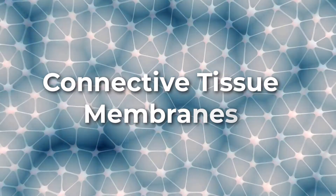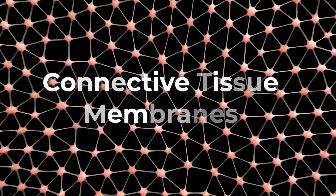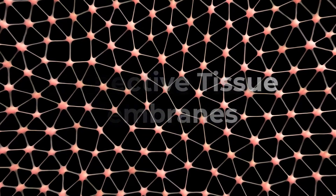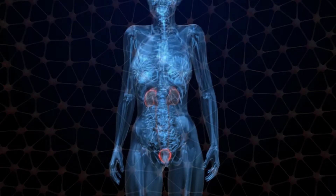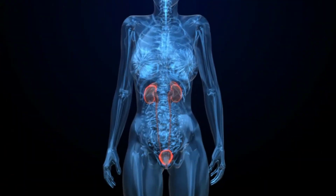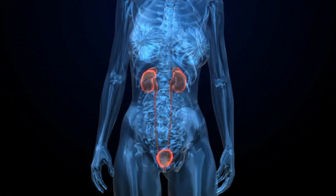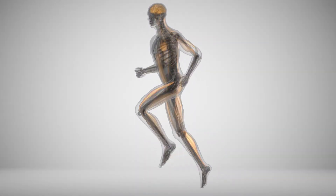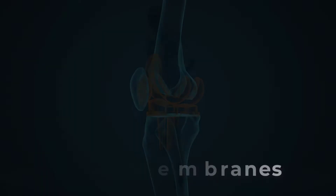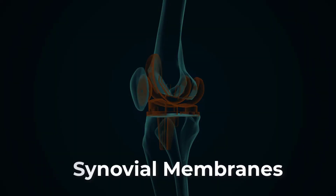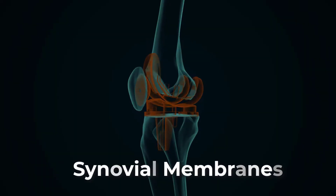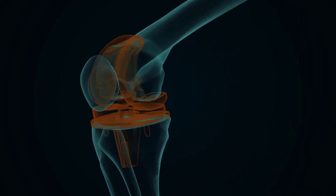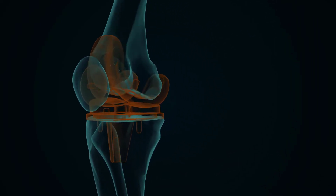The connective tissue membrane is formed solely from connective tissue. These membranes encapsulate organs such as the kidneys and line our movable joints. A synovial membrane is a type of connective tissue membrane that lines the cavity of freely moving joints.